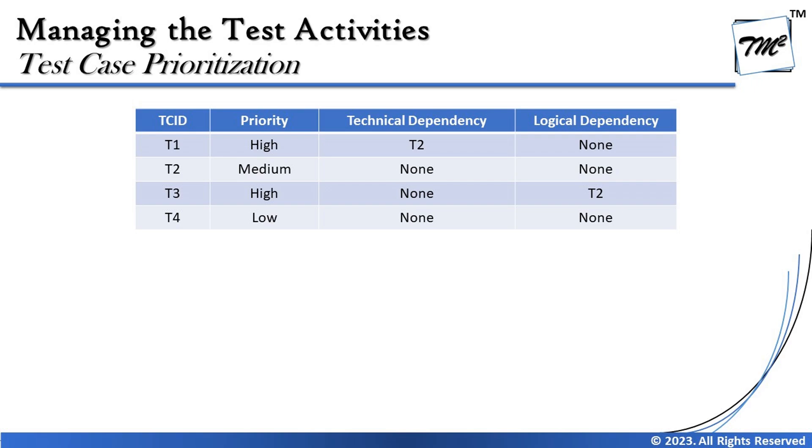The table contains four columns: test case ID, defined priority, technical dependency, and logical dependency. Technical dependencies are those where elements are technically dependent on each other — for example, you cannot log in without first signing up, so sign up must be executed before log in. Logical dependency relates to test execution order itself — for example, running valid test cases before invalid ones.